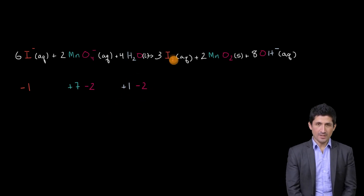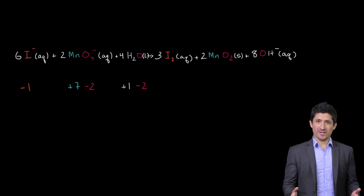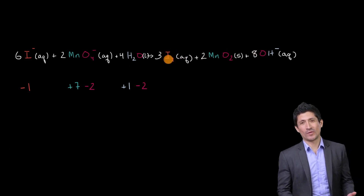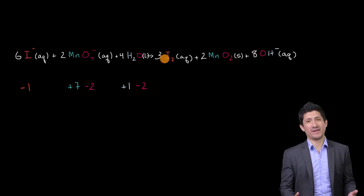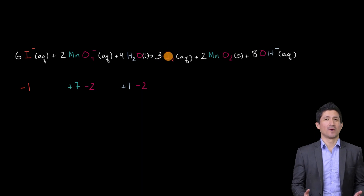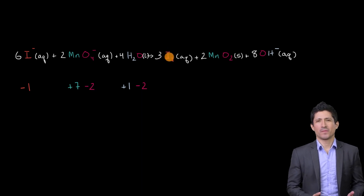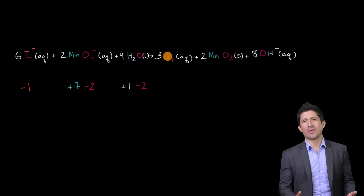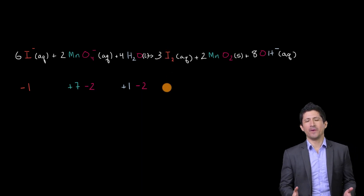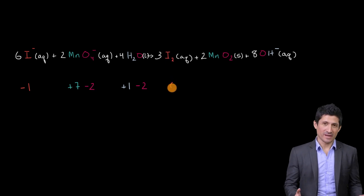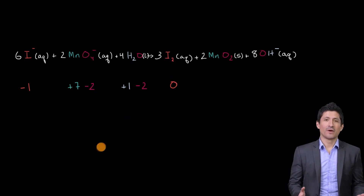Now let's look at the right-hand side of this reaction. What's going on with these iodines here? In this iodine molecule, they aren't gaining or losing electrons, so the oxidation number is zero.